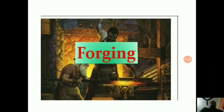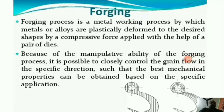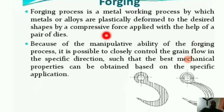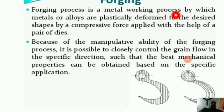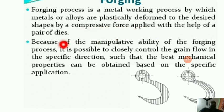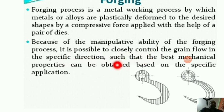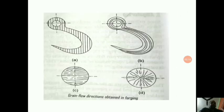Forging is a metal working process by which metals or alloys are plastically deformed to the desired shapes by a compressive force applied with the help of a pair of dies. Because of the manipulative ability of the forging process, it is possible to closely control the grain flow in a specific direction such that the best mechanical properties can be obtained based on the specific application.